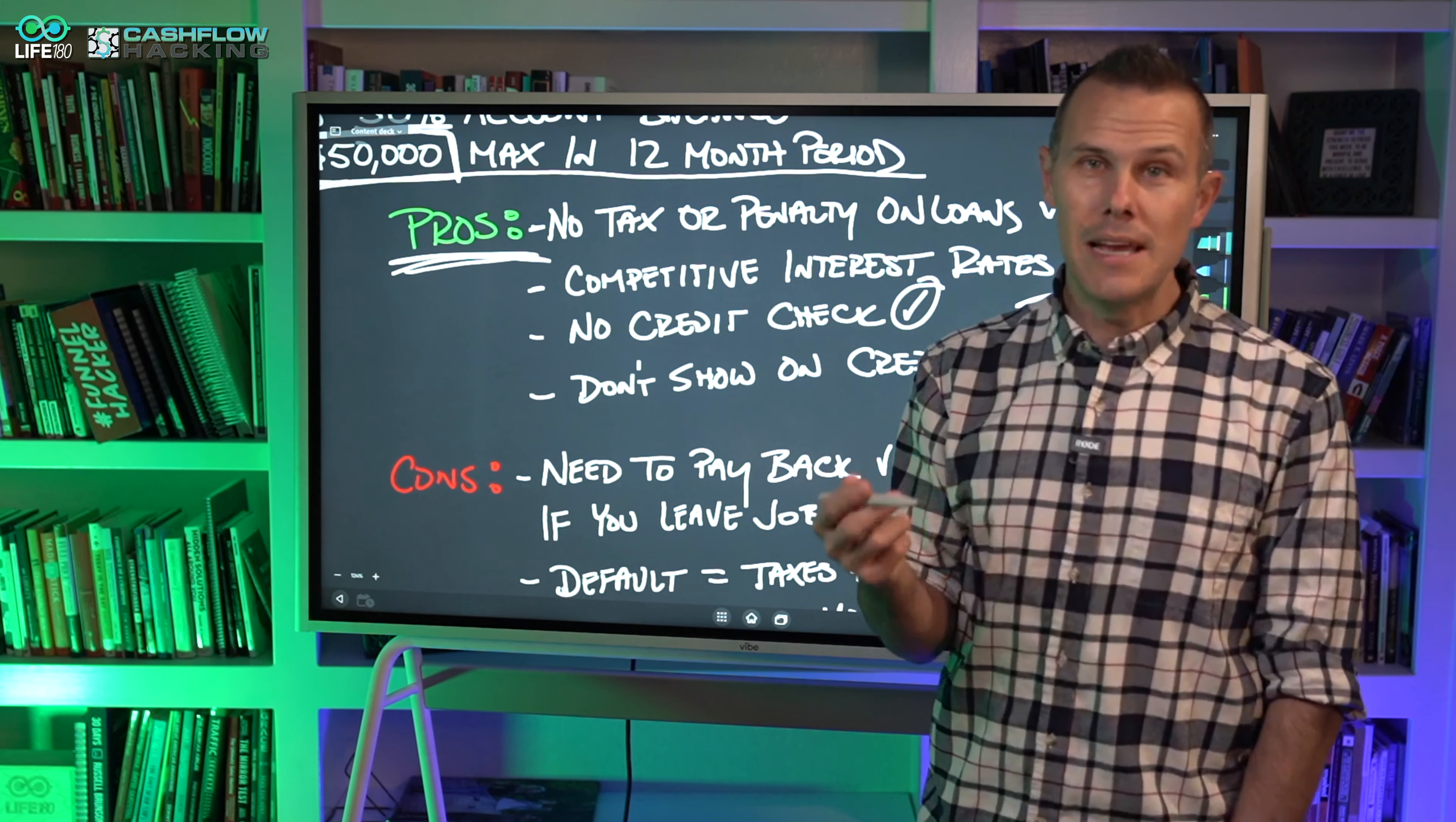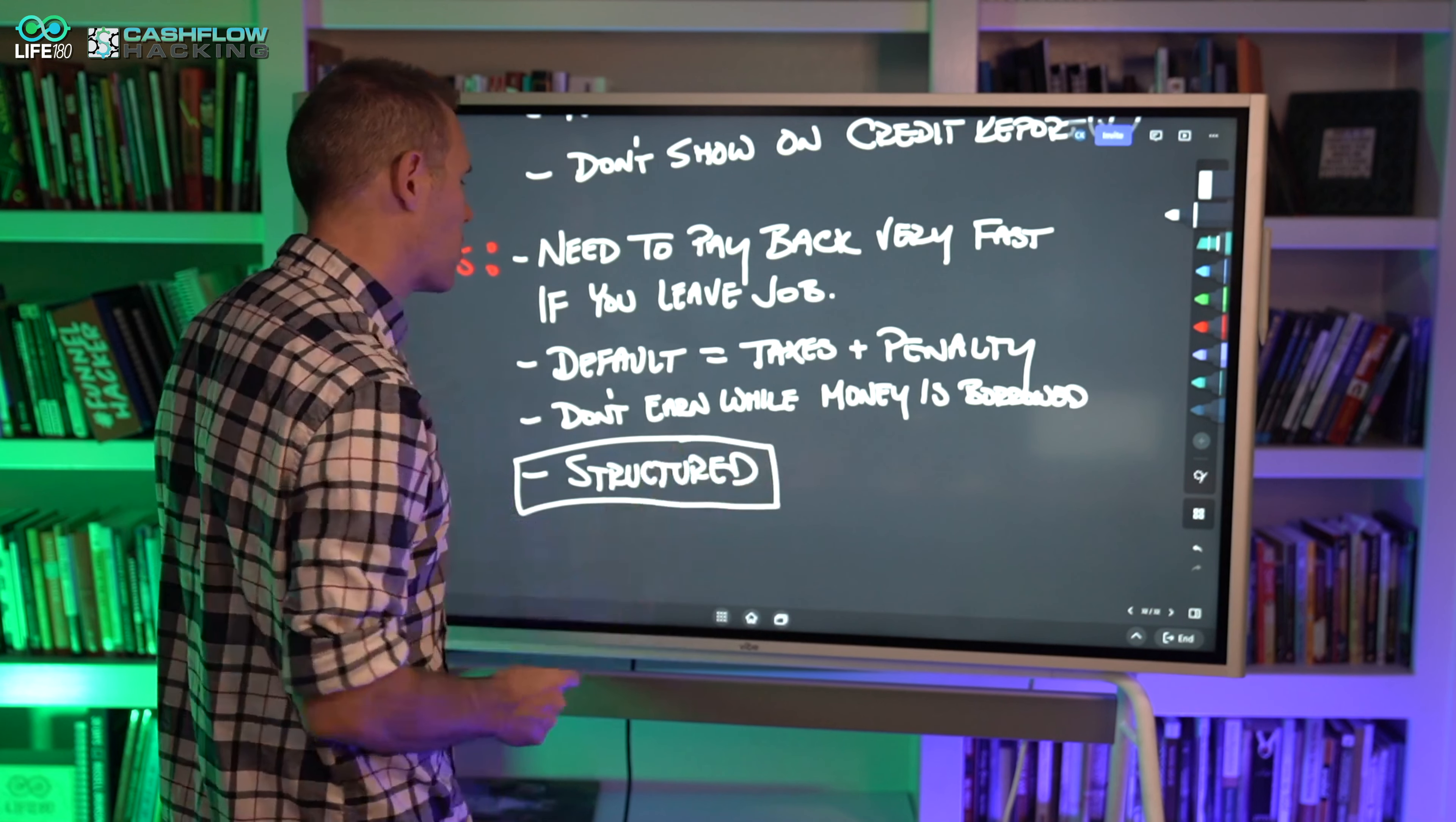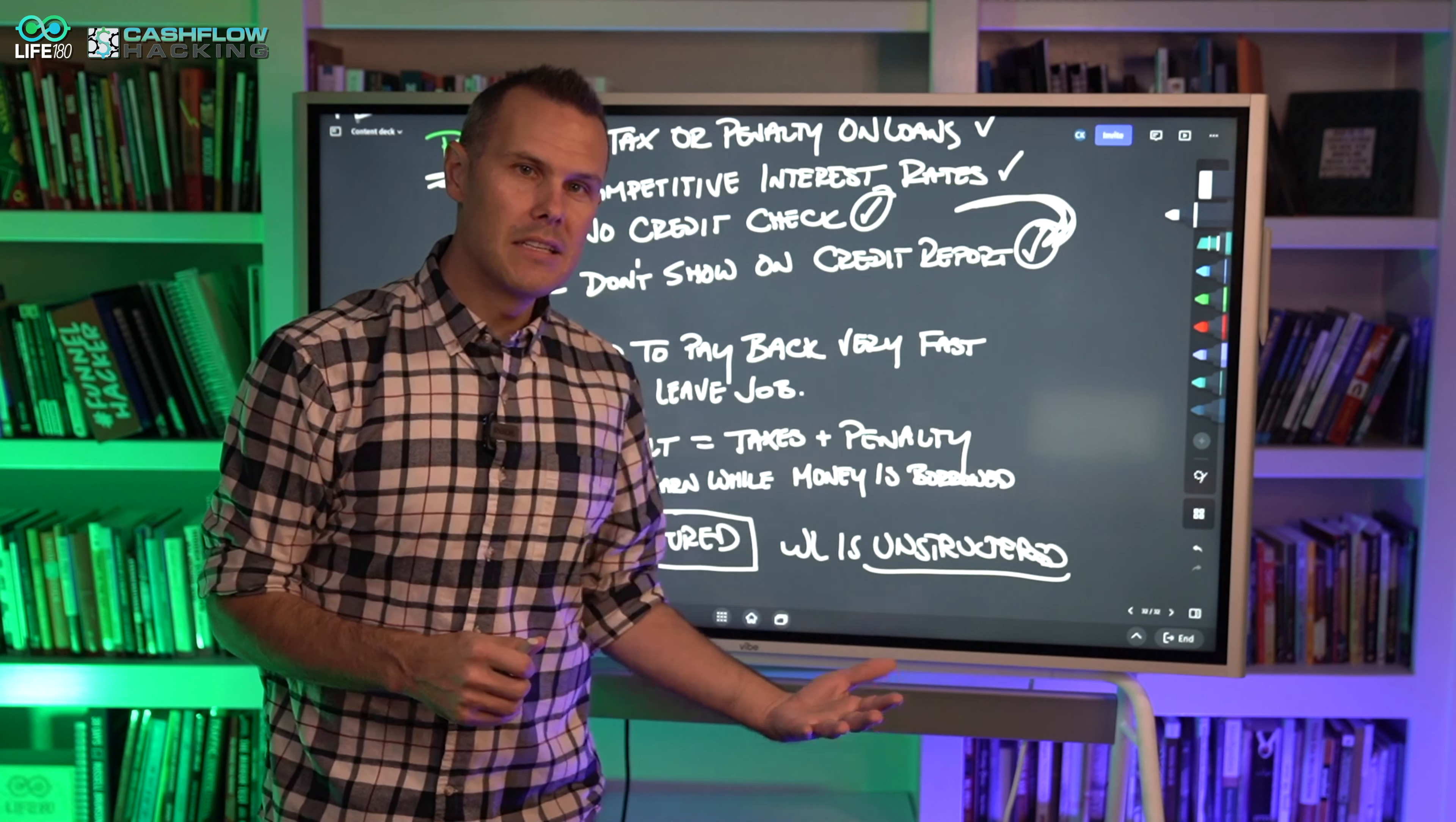These two areas - no showing up on your credit report and having no credit check - are very similar to a whole life insurance policy loan. That's one of the things that we tout about a whole life policy loan that is very beneficial. With a whole life policy loan, there is no credit check and there's no reporting that happens with it.